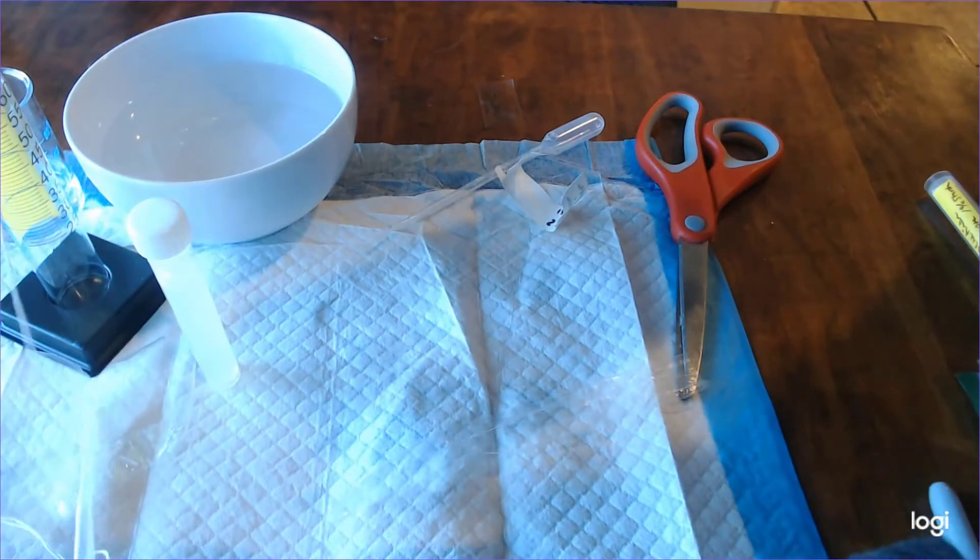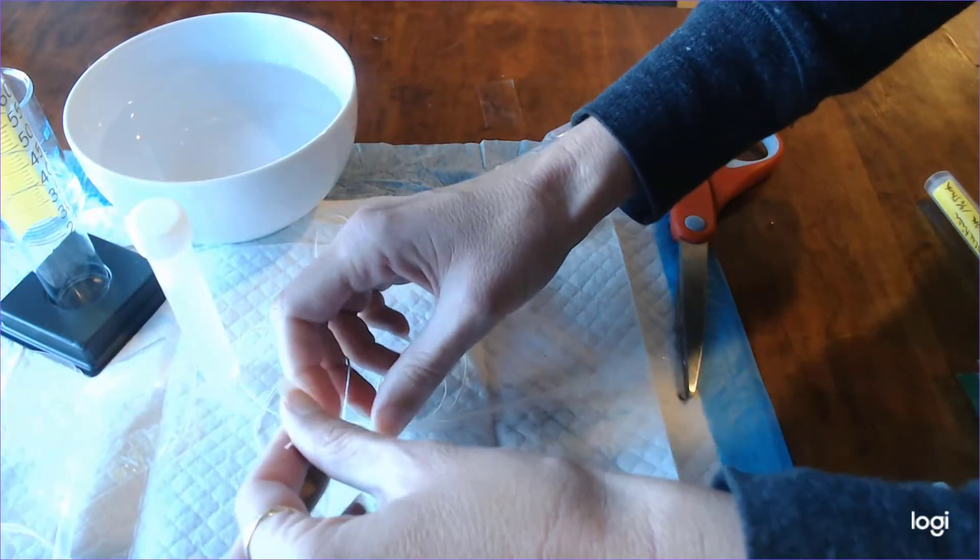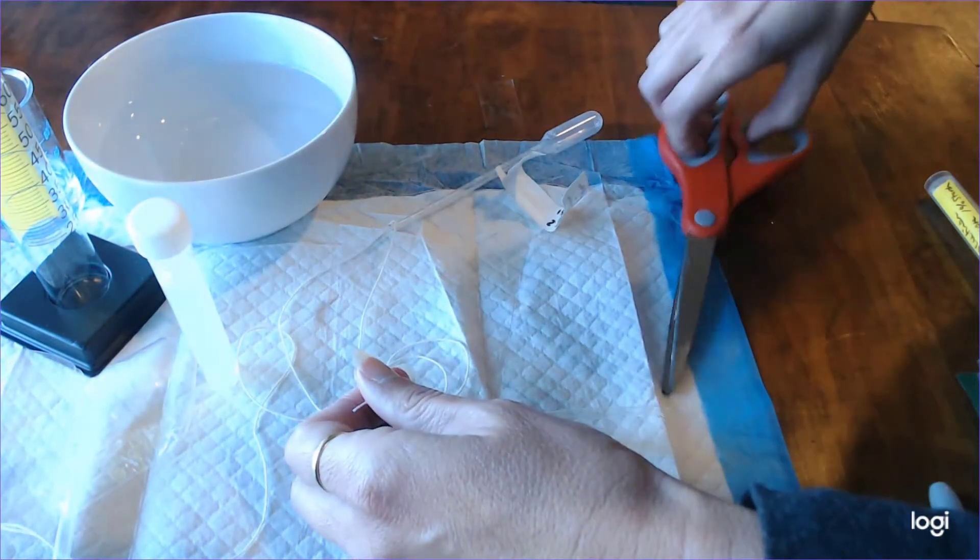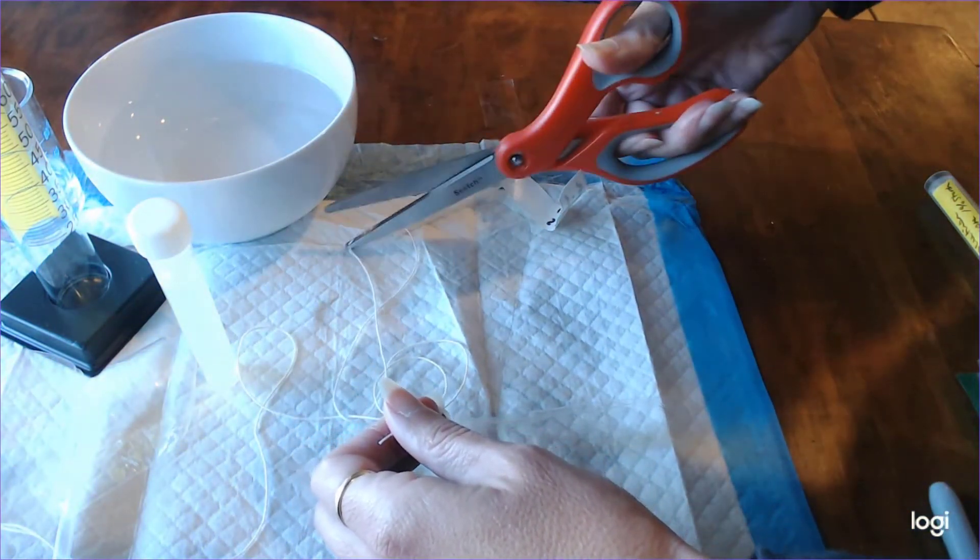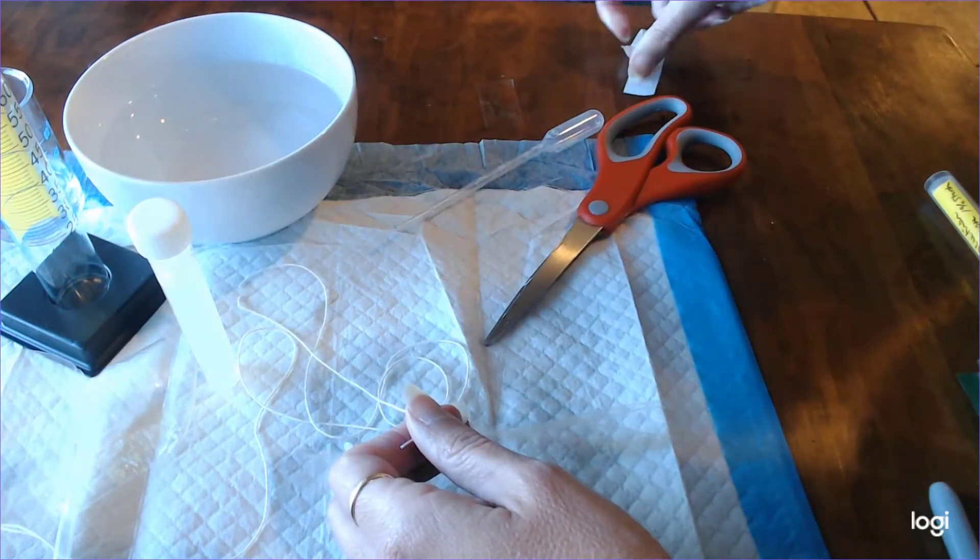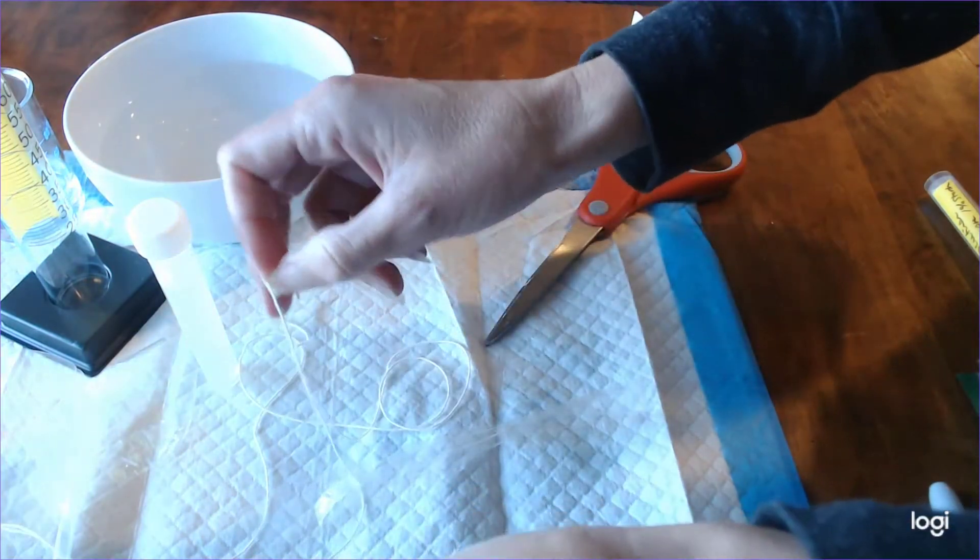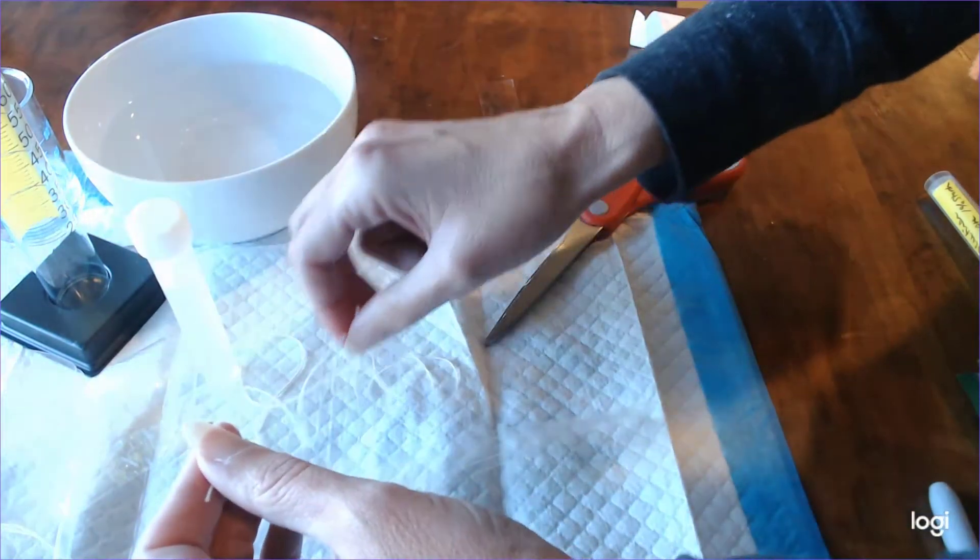I'm first going to cut down my string so that I have a smaller amount to work with and then what I'm going to do is carefully tie that string very very tightly at approximately that location, maybe about three quarters of an inch from the end, and I'm going to tie it tight and a few times over.